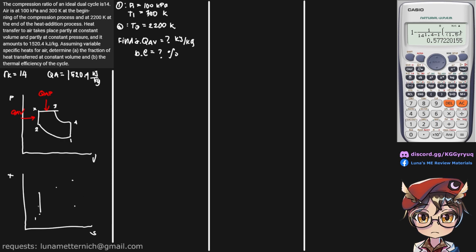For our TS diagram: state 1, state 2, curves up into state X, goes to state 3, goes down to state 4 and curves downward back to state 1. The heat rejected is labeled here on the diagram.